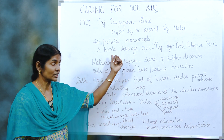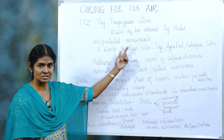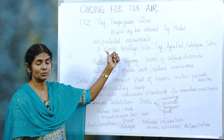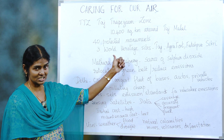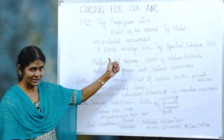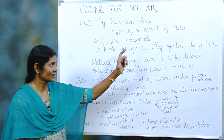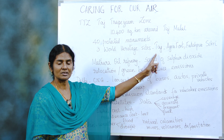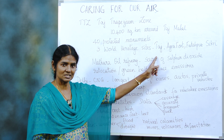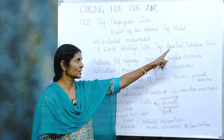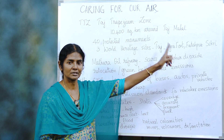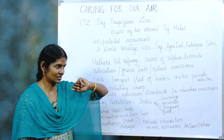The Taj Trapezium Zone has 40 protected monuments including three world heritage sites. Those three are: the Taj Mahal, the Agra Fort, and Fatehpur Sikri.